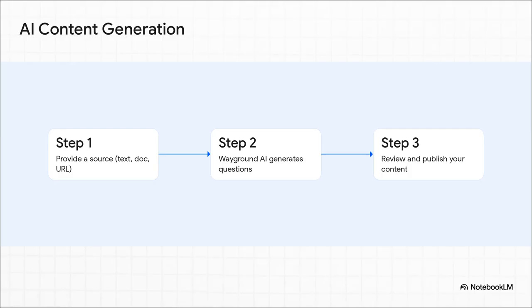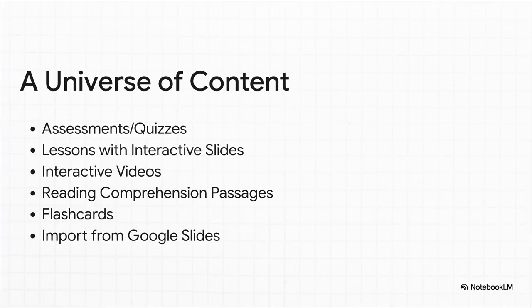This is where that AI co-pilot really starts to shine. A teacher can just provide a source — a link to a YouTube video, a text document, or even just a simple text prompt — and WakeRound's AI generates a whole lesson or a full quiz in minutes. It's a simple three-step process that could literally save hours of prep time.